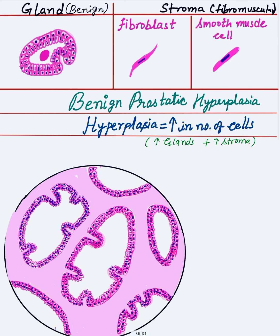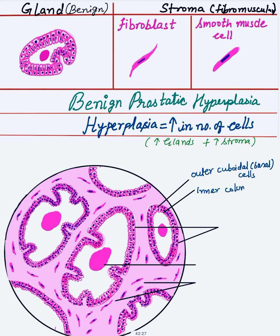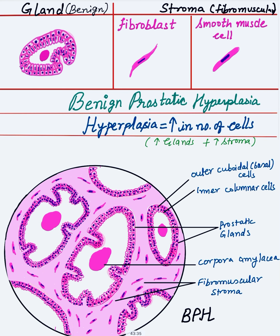After filling the stroma with pink, draw the fibroblasts and smooth muscle cells in the interglandular spaces. At the end, draw the secretions — corpora amylacea — in the glands; these are just dehydrated prostatic secretions. In this way the diagram of BPH is drawn. The last and most important part is labeling: label the cuboidal basal cells, inner columnar cells, prostatic glands, corpora amylacea in the lumen, and lastly the fibromuscular stroma.